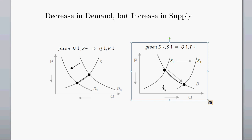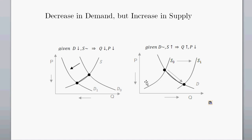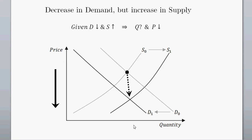Looking at the two forces together: price given a decrease in demand decreases, and equilibrium price given an increase in supply decreases as well. However, quantity goes down with the decrease in demand, and quantity increases with the increase in supply. So when we combine these two shifts together, we get an ambiguous effect on quantity, but we know price is going to go down.